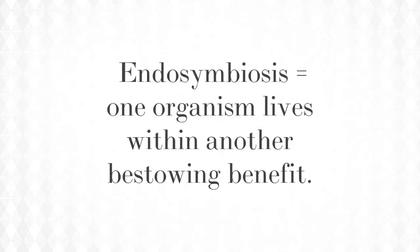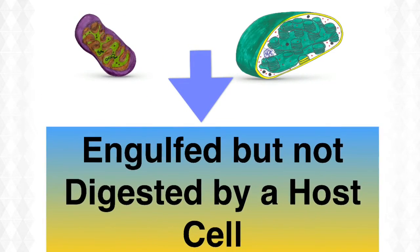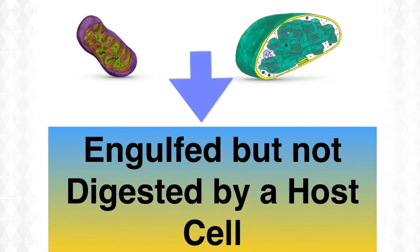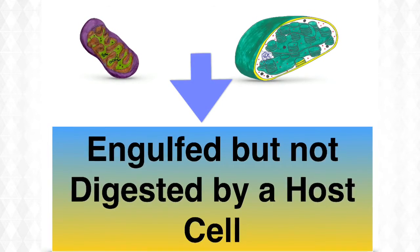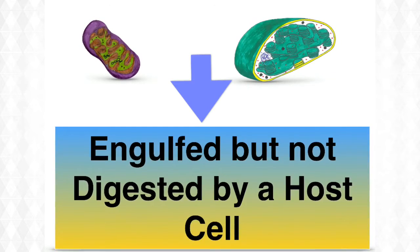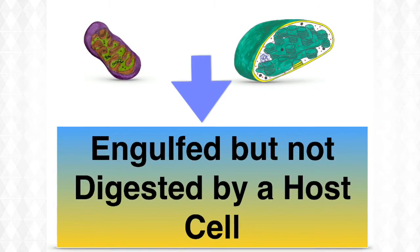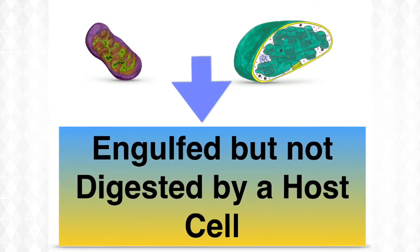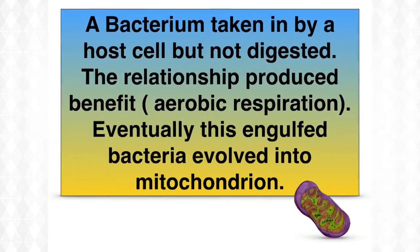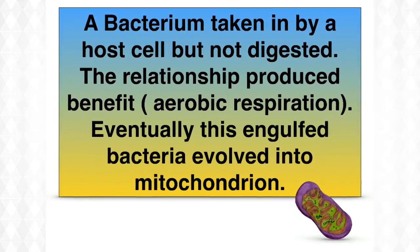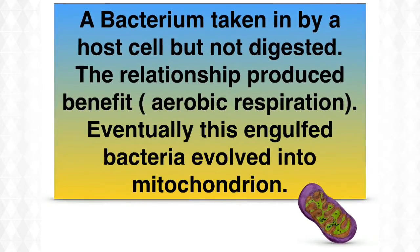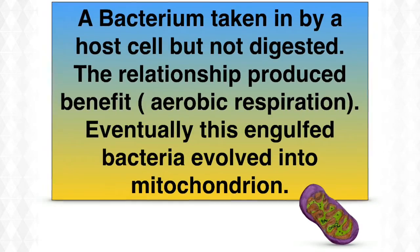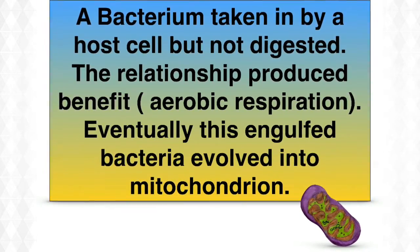Endosymbiosis is when one organism lives within another, bestowing benefit. Endosymbiosis proposes that an ancient bacterium was taken into a host cell but not digested, and because all eukaryotic cells have mitochondria, we believe it happened to the mitochondrion's evolutionary ancestor first. Some type of bacterium must have been taken inside a host cell but not digested, and this bacterium must have aerobically respired, producing energy for the cell. Eventually, this evolved into the mitochondrion.